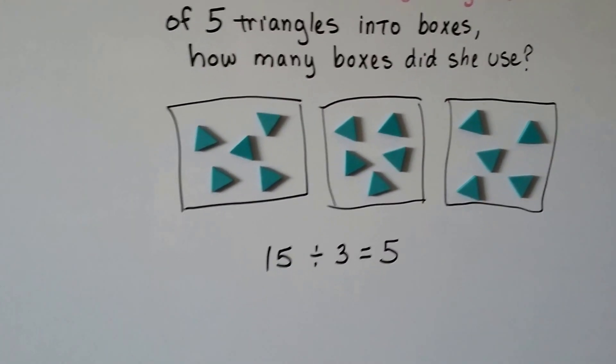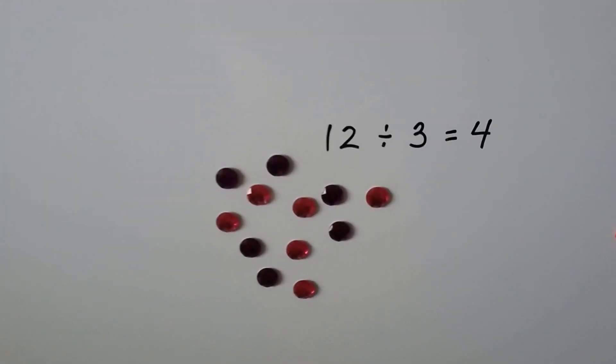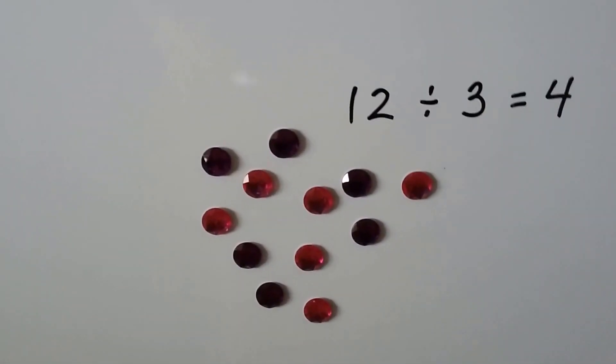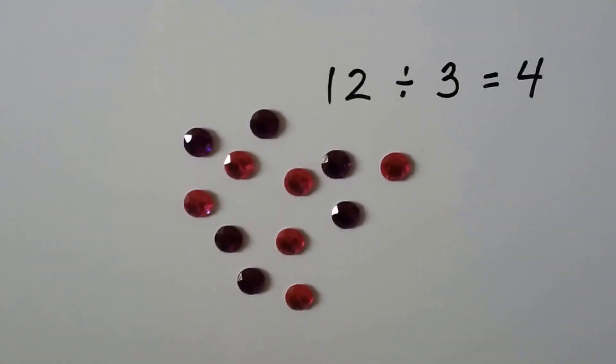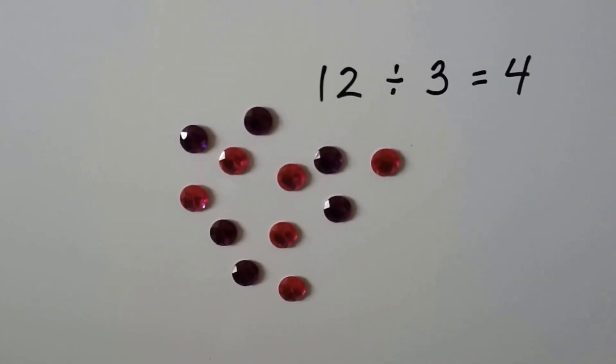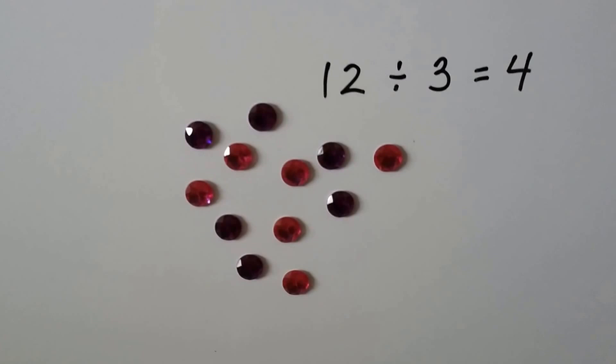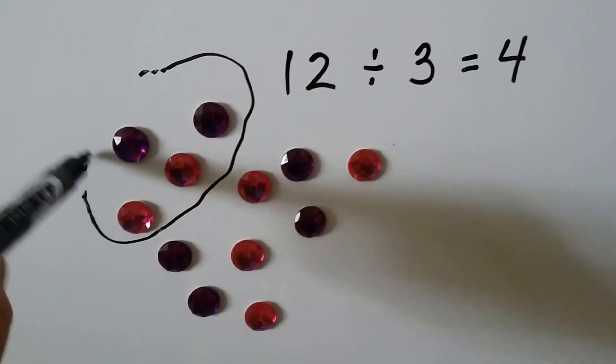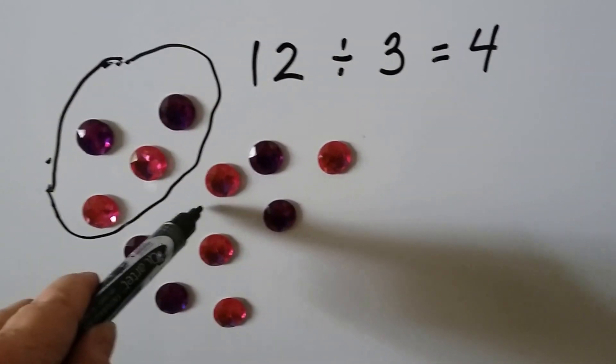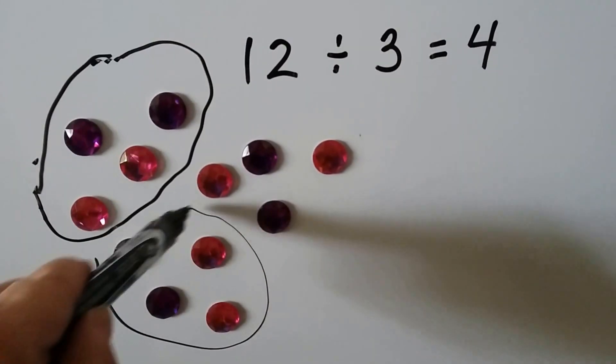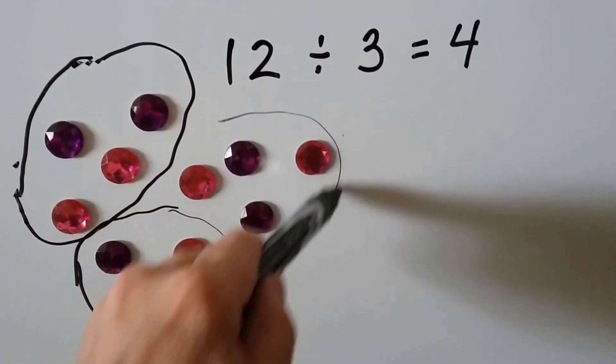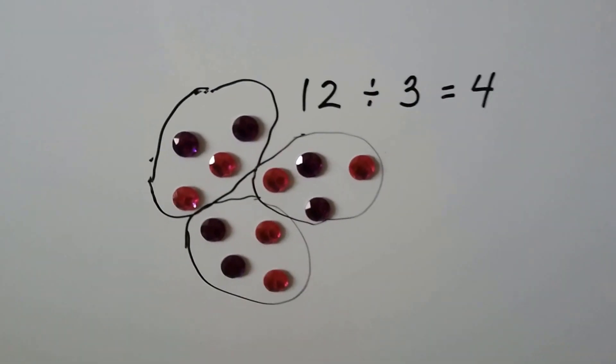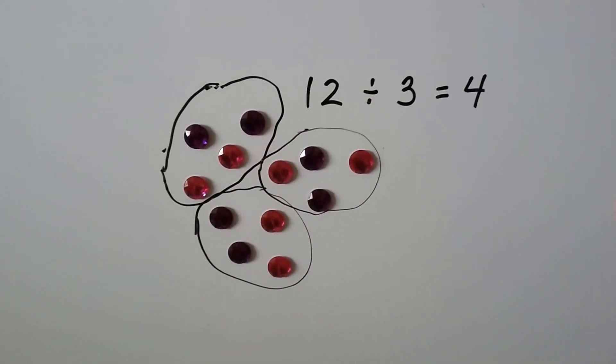Look at this one. We have twelve gems here. If we divide them into three groups, we should have four in each group. There's four in this group. There's four in this group. There's four in this group. Twelve divided into three groups is four in each group.